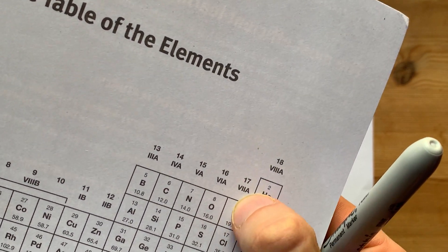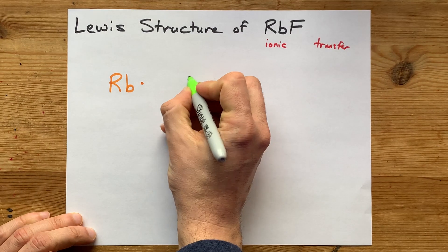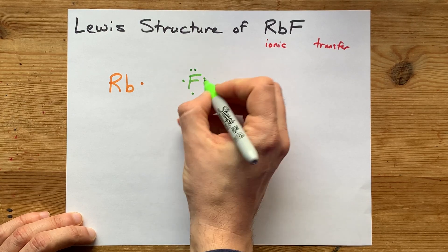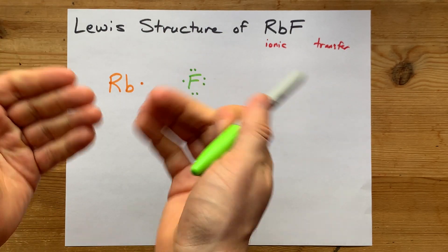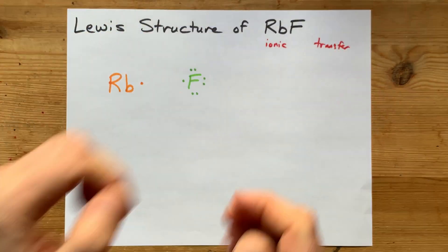Fluorine, in group 17, has seven electrons in its outer shell. 1, 2, 3, 4, 5, 6, 7. These are the Lewis structures for the atoms, but you were asked for the Lewis structure for the compound.